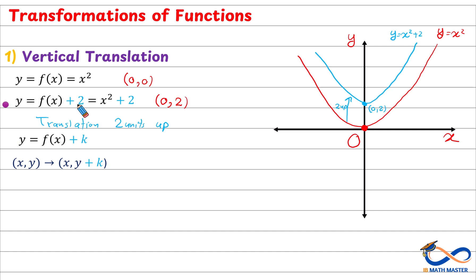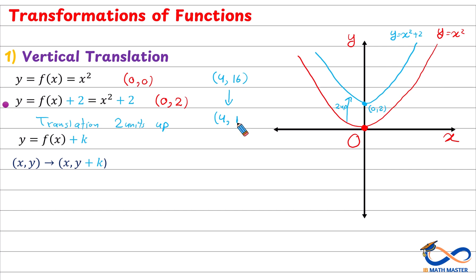For example, another point on the original function would be (4, 16), since 4 squared is 16. If we move 2 units up, x stays as 4, but we add 2 to the y-coordinate 16, giving us 18. So the new point is (4, 18).